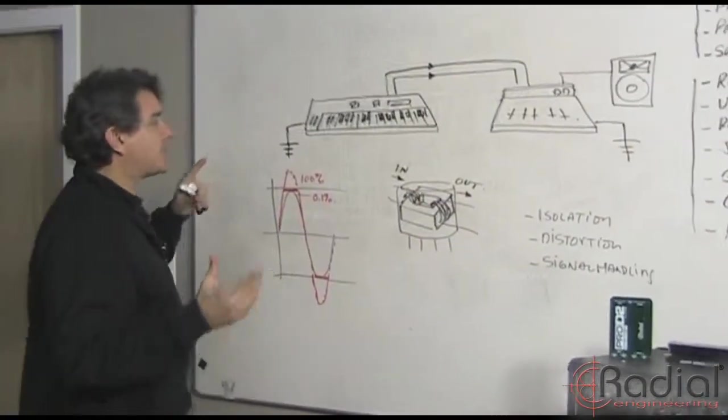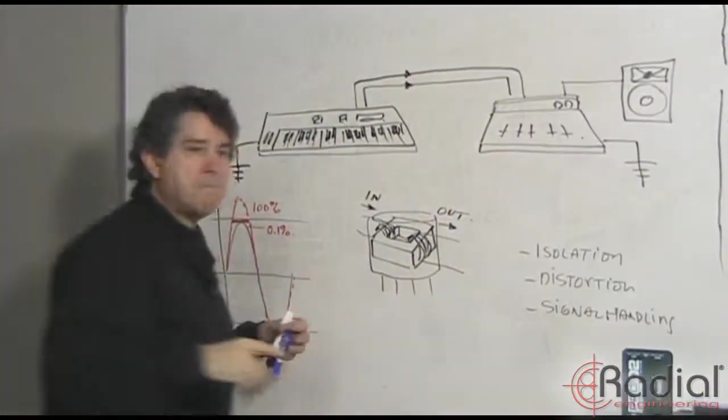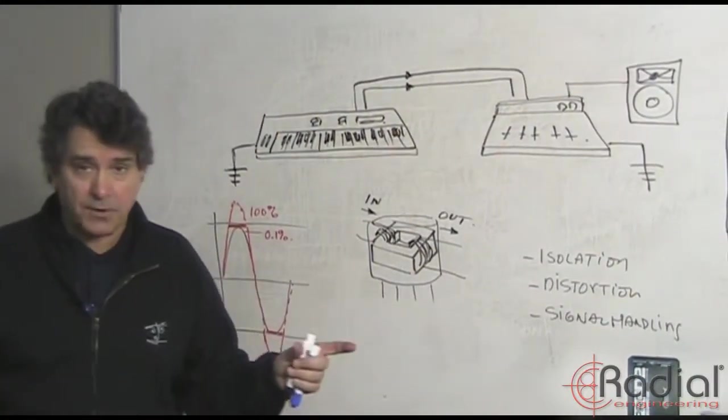First off, what a DI box does is it takes an unbalanced signal, balances it, and then allows it to run long distances. So I can run 100 meters or 300 feet without a bunch of noise.